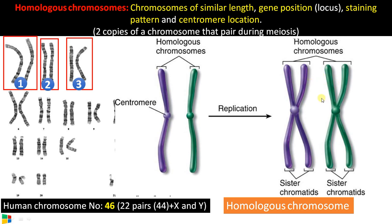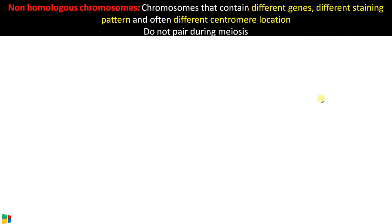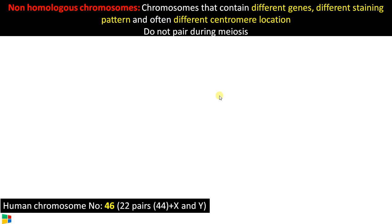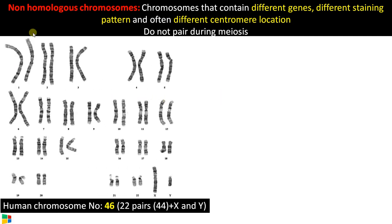Hope you are clear. Now moving on to non-homologous chromosomes. Non-homologous chromosomes are chromosomes that contain different genes, different staining patterns, and therefore different centromeric locations. These chromosomes do not pair during meiosis. Taking the same karyotype as an example: one chromosome of chromosome number one and one chromosome of chromosome number two makes a non-homologous pair. Similarly, chromosomes 10 and 11, or 4 and 5.